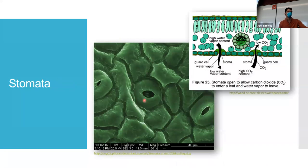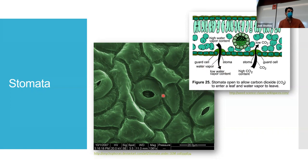Here's what stomata look like at the plant level. There are these little pores, and inside the plant water moves through. The stoma can open and close — they're bringing in carbon dioxide and ejecting water vapor and oxygen. They can open and close depending on how much water content is inside the plant.